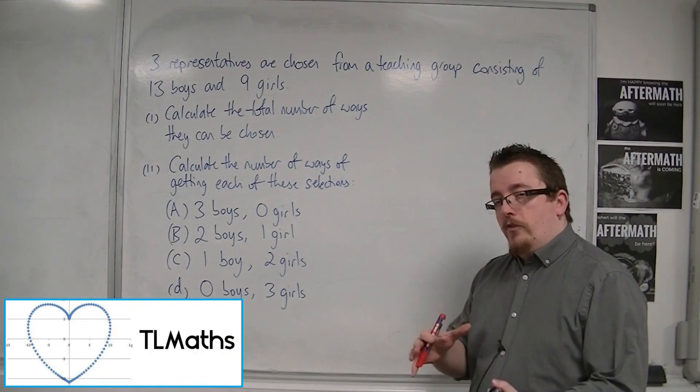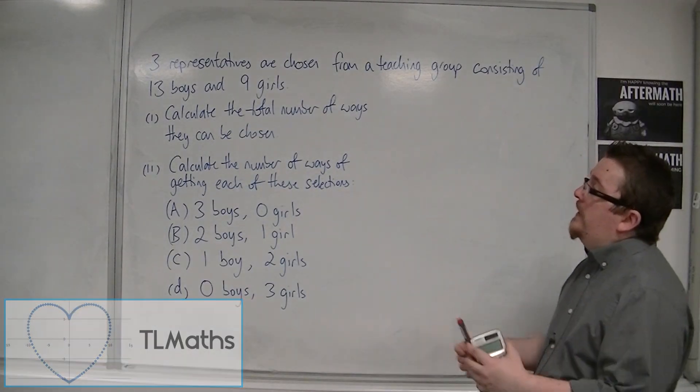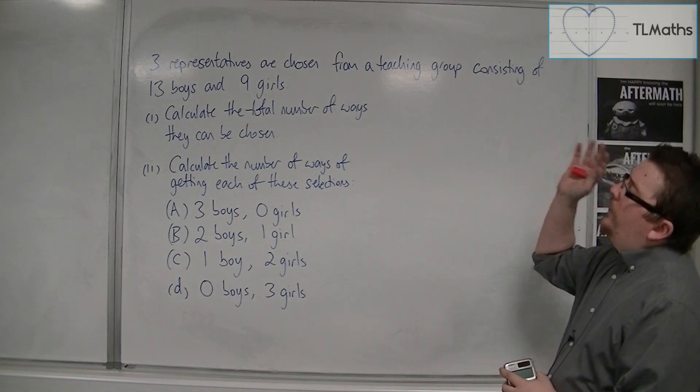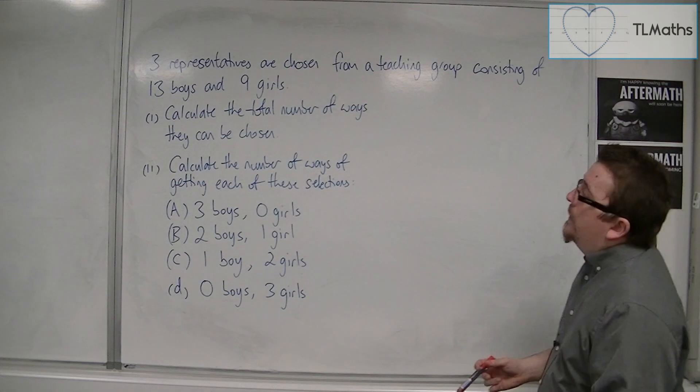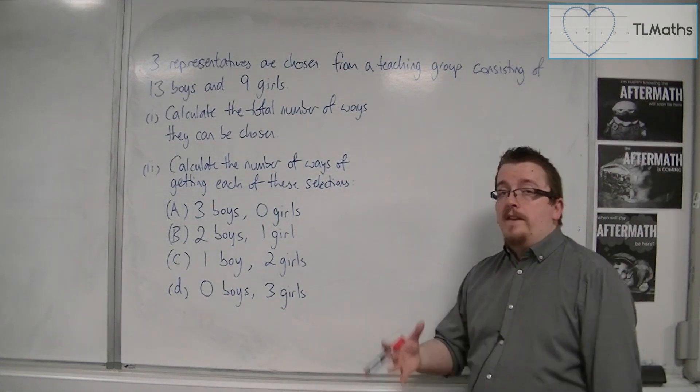In this video, I want to go through an example of finding combinations. Three representatives are chosen from a teaching group consisting of 13 boys and 9 girls.